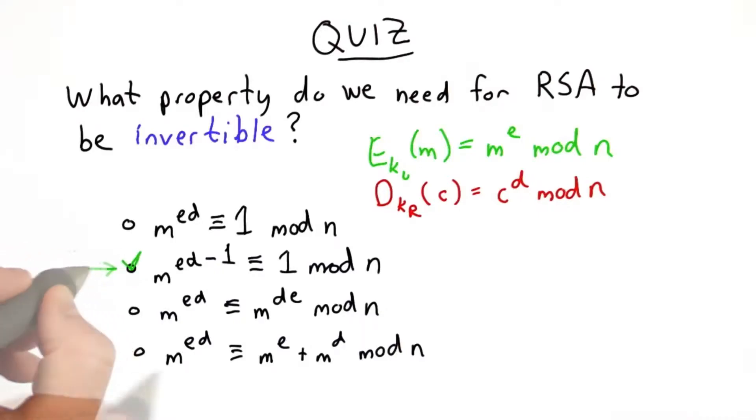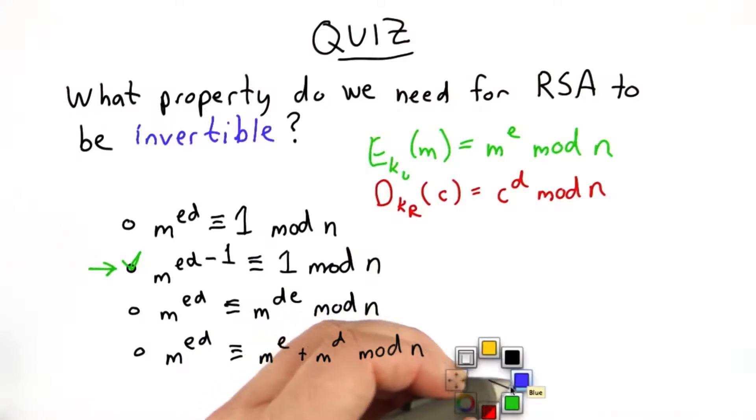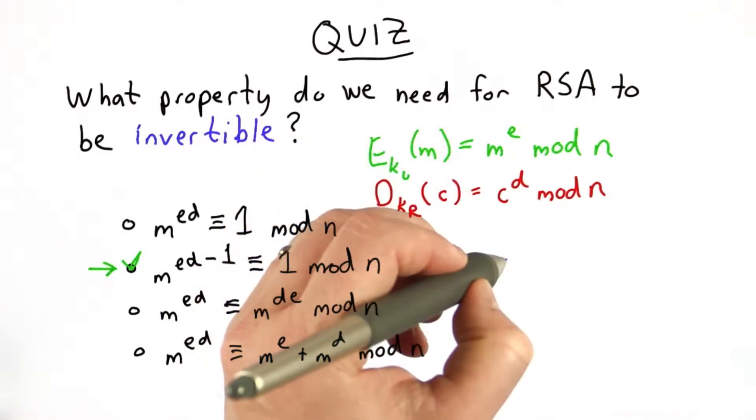The answer is the second choice. What we want to know is that we can get the message back. To get the message back, we started by encrypting the message.